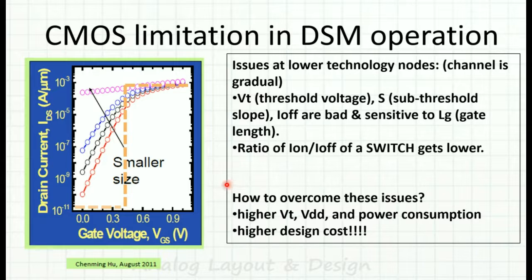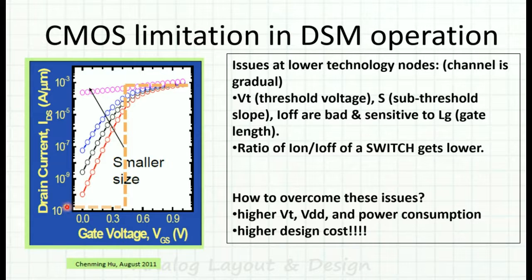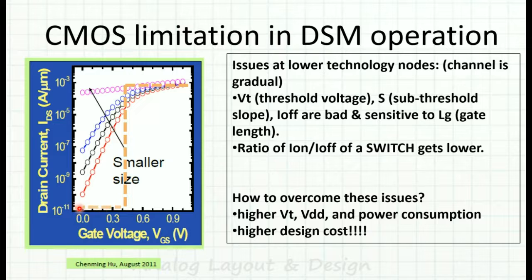We use a MOSFET as a switch. When the switch is on, there should be full flow of current, and when it is off there should be no flow. The current-controlling voltage is VGS. If the threshold voltage is say 0.4V, then when VGS is greater than 0.4V the switch is on and full current flows — around milliamps. When VGS is less than 0.4V, ideally no current flows — on the order of 10 to the power of minus 11 amps.